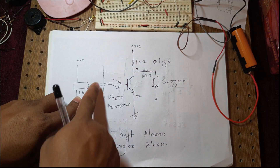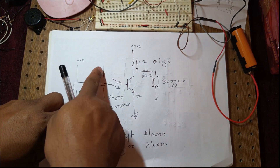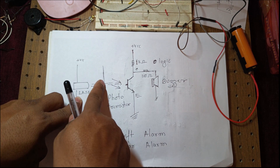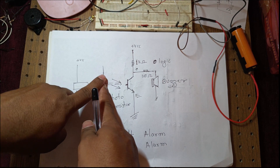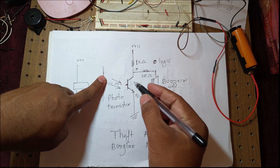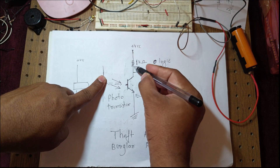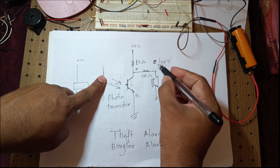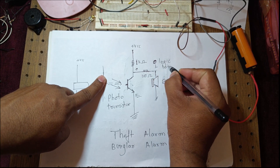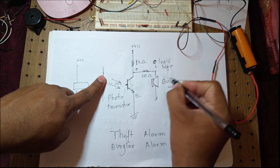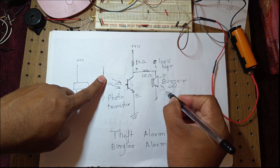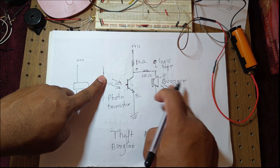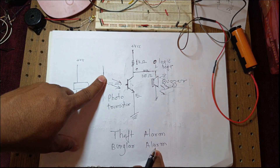When a thief enters through the gate, window, or door, this light gets interrupted. Once interrupted, the transistor turns off, the current flow from collector to emitter stops, the output becomes logic one, and the alarm buzzer starts buzzing.